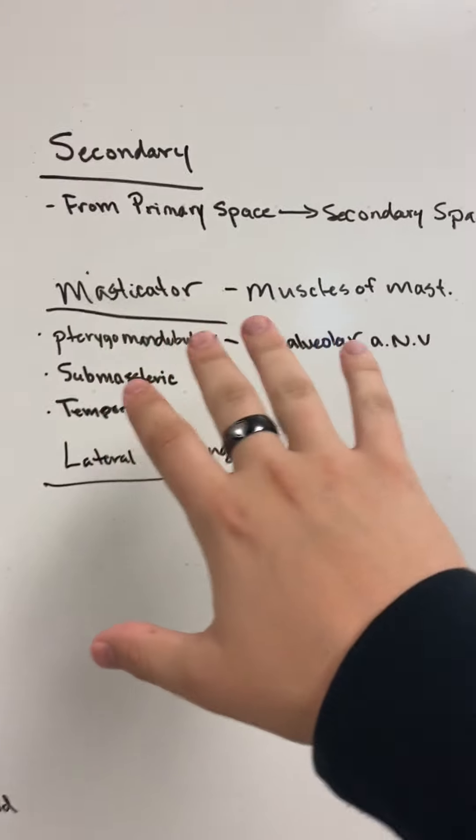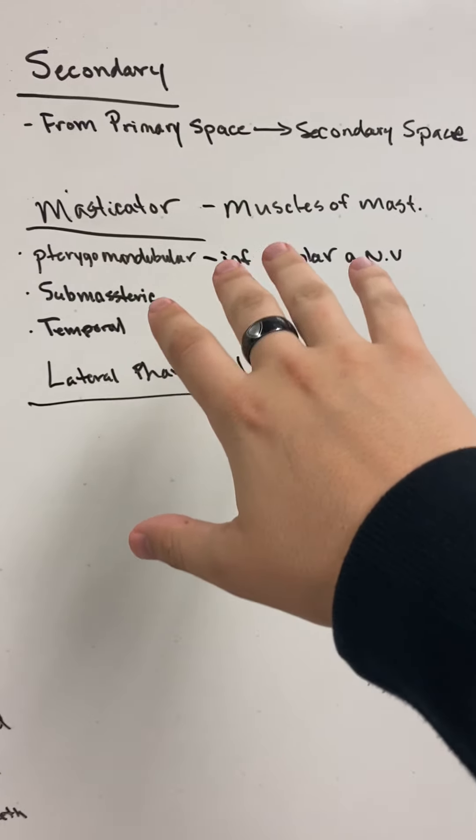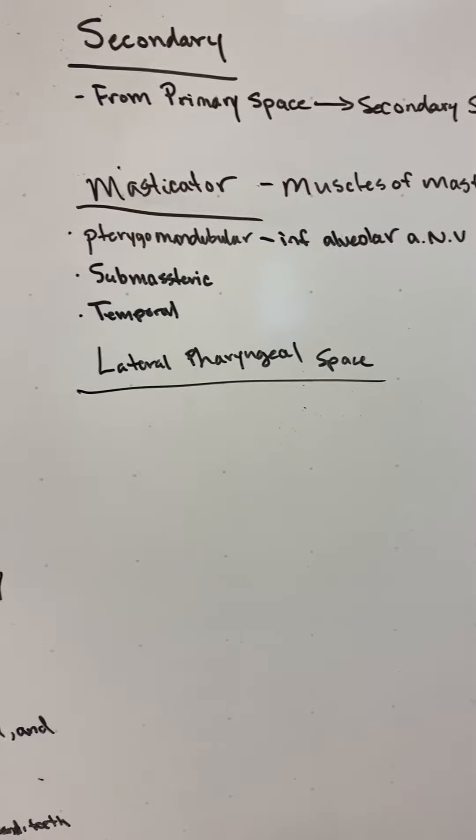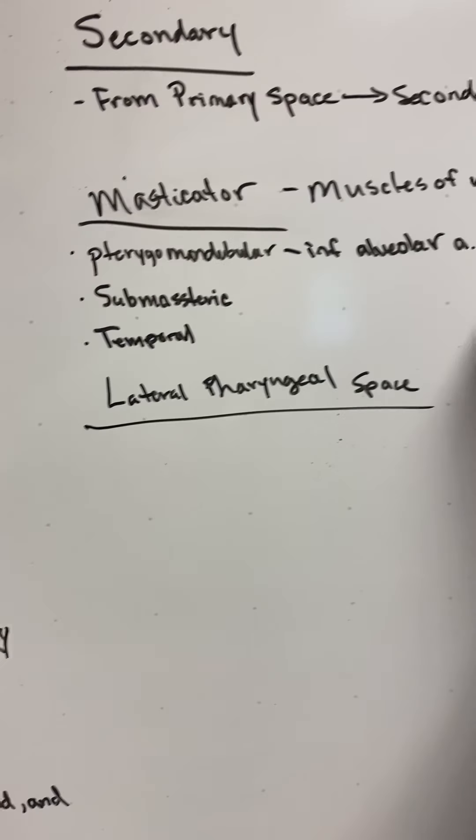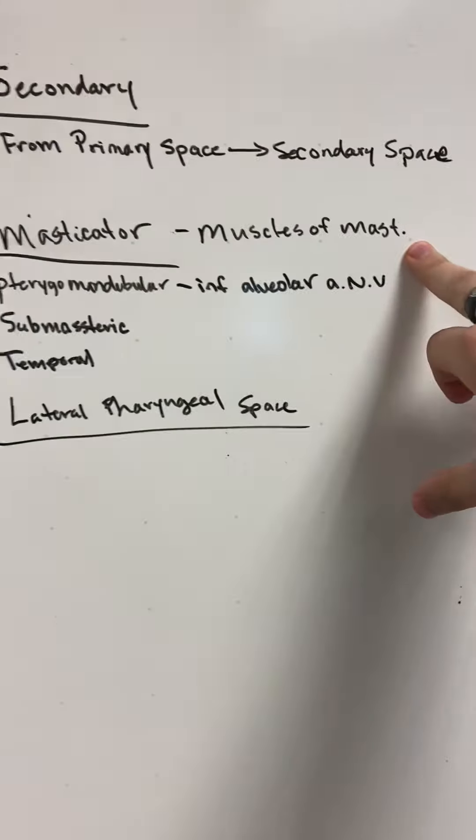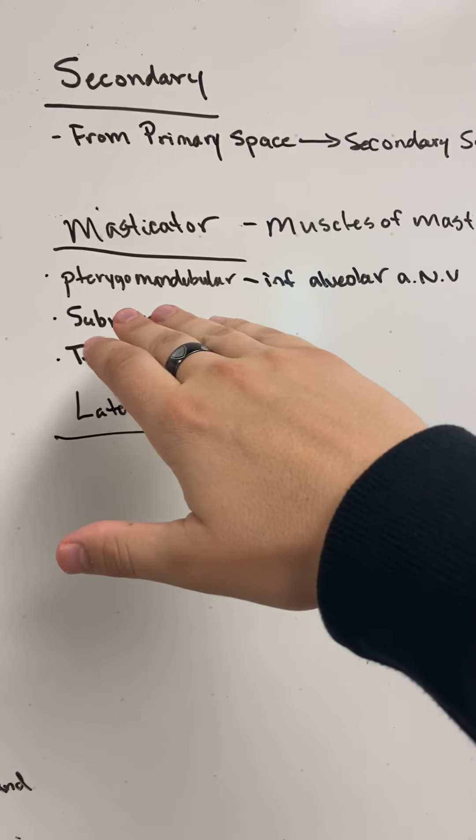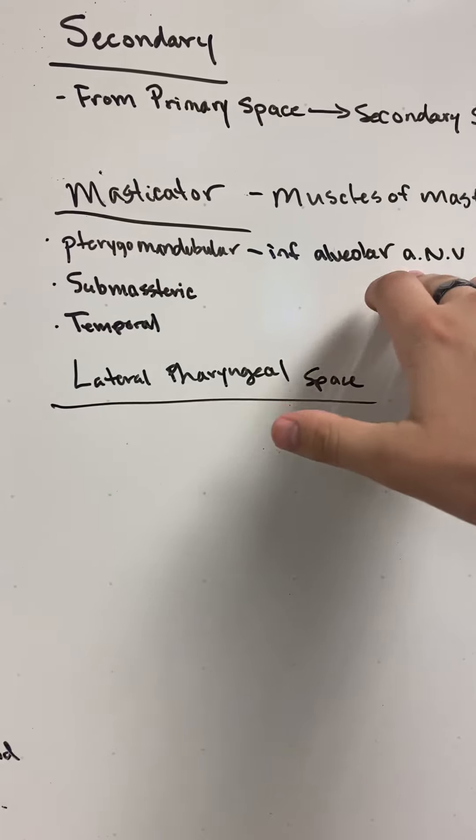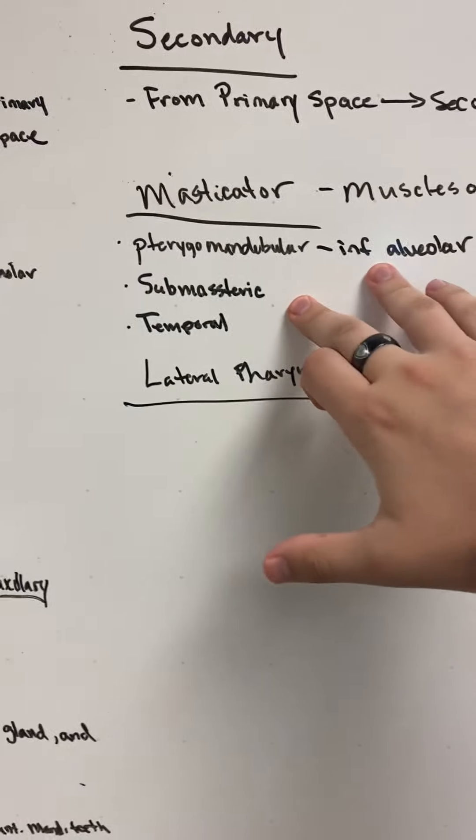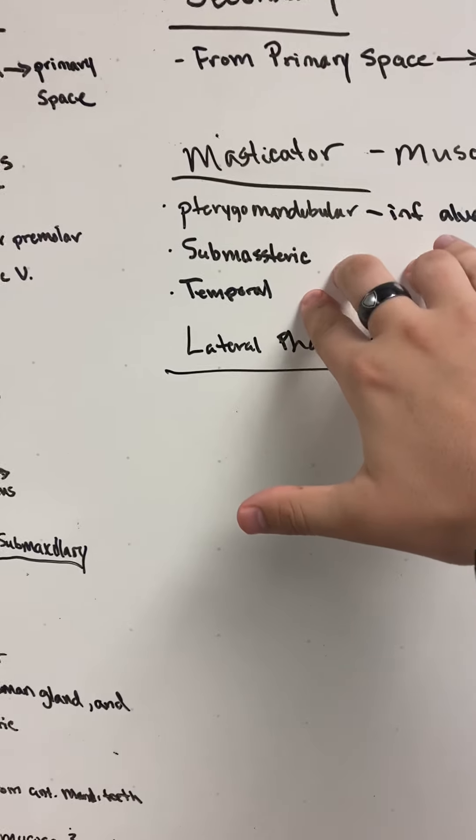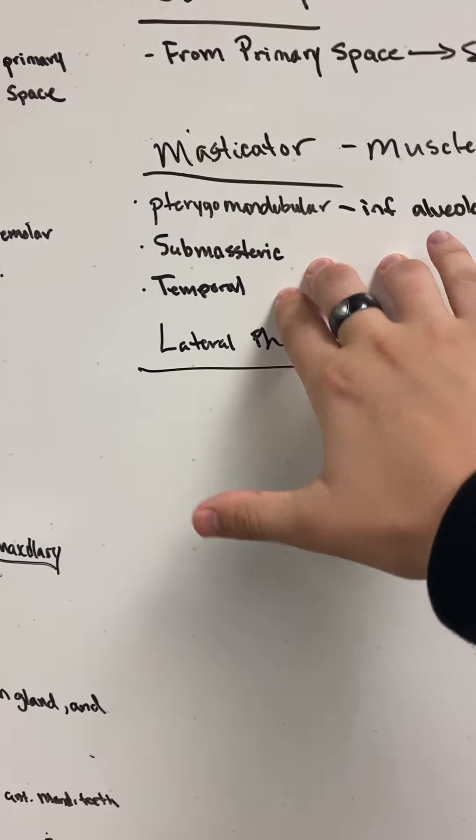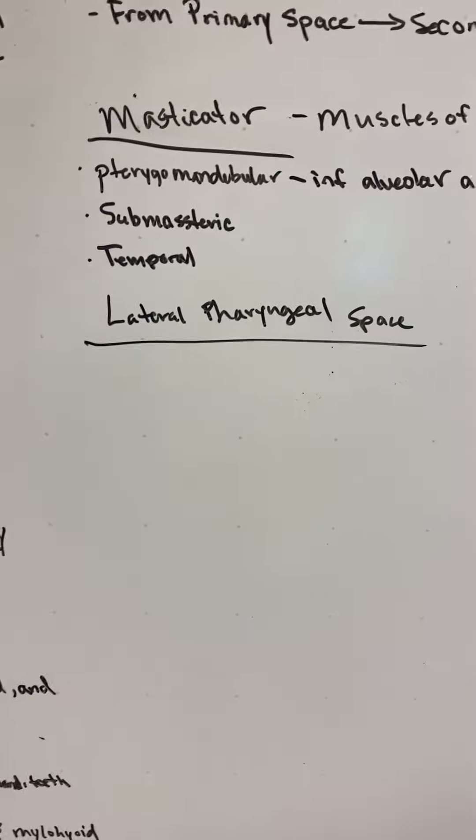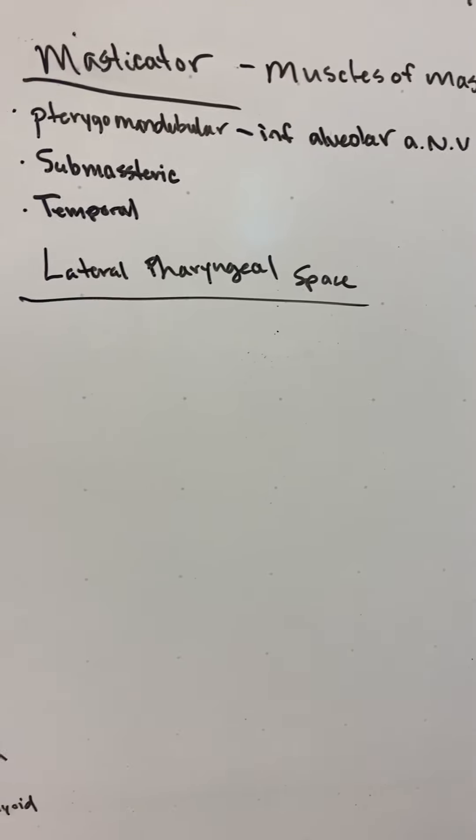From here we have secondary spaces. We have the muscles of mastication, really what these are. They go into the more cheek-ish areas. So we have pterygomandibular, which is the inferior alveolar with the artery, nerve, and vein, submasseteric, temporal, and then the lateral pharyngeal space, lateral to the pharynx.